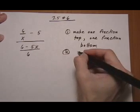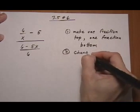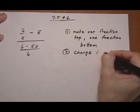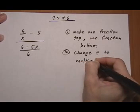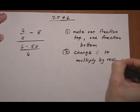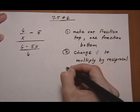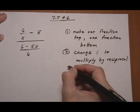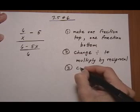And after we do that, we're going to change division to multiply by reciprocal. And then we're going to cancel and multiply.